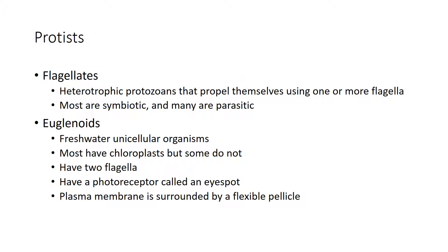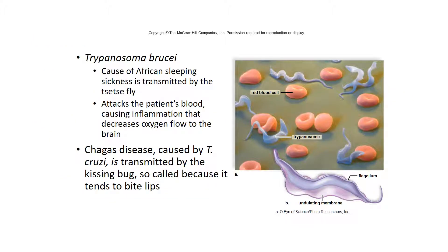Flagellates typically tend to be divided into protists that resemble animals, like a zooflagellate, or those that resemble plants, like euglena. A lot of them are symbiotic, having mutualistic relationships, and a lot are parasitic — they have to get their food from a host. Flagellates typically have flagella, a whip-like tail that helps them get around. Euglena, or euglenoids, are unicellular organisms that live in pond water. Some have chloroplasts, some don't; they typically have two flagella, an eye spot, and a plasma membrane.